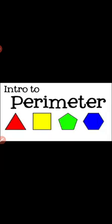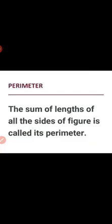Let us begin. First of all we are going to read about Perimeter. So what is Perimeter? The sum of length of all the sides of a figure is called its Perimeter. That means, for any shape, the sum of all the lengths is called Perimeter.